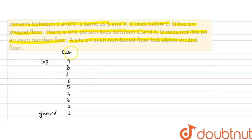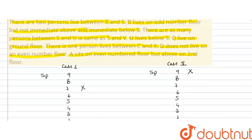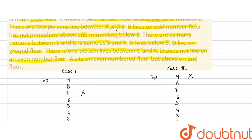यह Case 1 है — X की position को 7th floor पे रख रहे हैं। Second case draw करते हैं — Case 2 है, X की position को 9th floor पे रखते हैं। Next condition देखते हैं: there are two persons living between X and S. Two persons X और S के बीच में हैं। यहाँ पर S की position नीचे देखते हैं — 1, 2 — यहाँ पर S की position होगी।